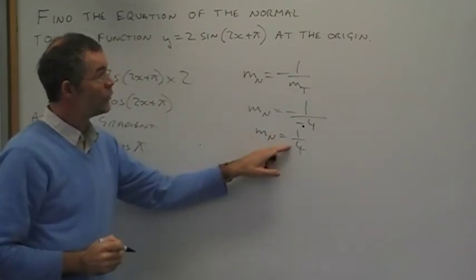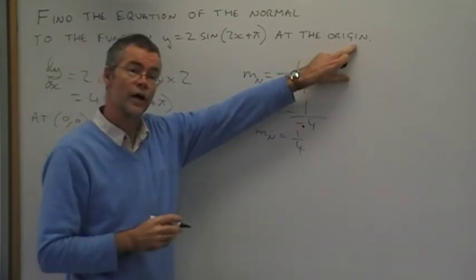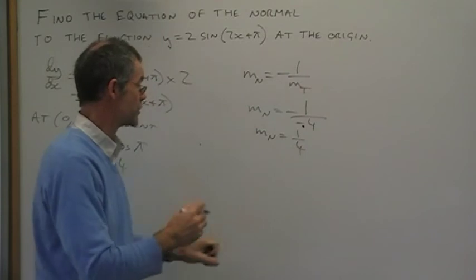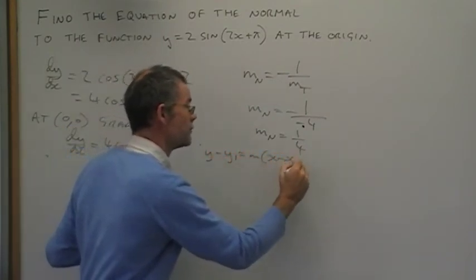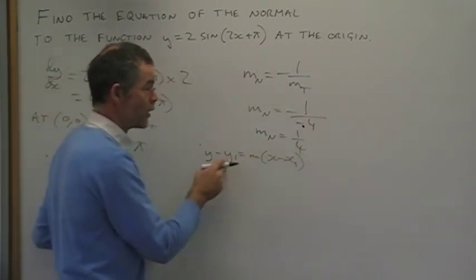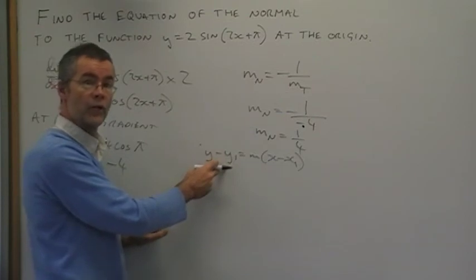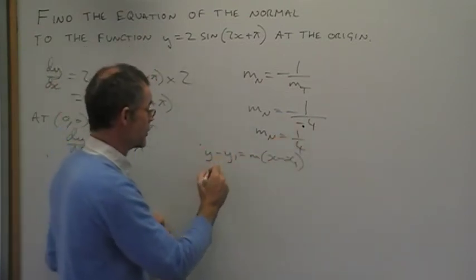We've got the gradient of the normal, we've got the point that it's going through, and so we can use the point-gradient formula. Here it is: y - y₁ = m(x - x₁). We substitute in the bits. x₁ and y₁ will be 0 and 0, because we're at the point (0,0). And m will be a quarter, so it should look something like this.